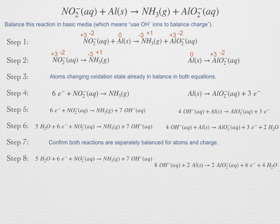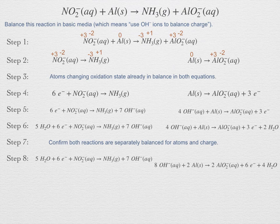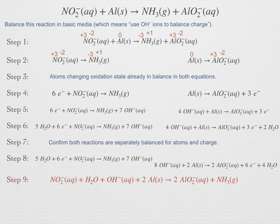Step 8: scale the reactions so that they both have the same number of electrons. The nitrogen reaction has 6 electrons, so multiply the aluminum reaction by 2 to bring its 3 electrons up to 6. Combine the half reactions to cancel electrons and anything else in excess. After cancelling — 7 hydroxide ions cancel leaving 1, and 4 water molecules cancel leaving 1 — the final balanced equation is: NO₂⁻ + H₂O + OH⁻ + 2Al → 2AlO₂⁻ + NH₃. It is always a good idea to check the final equation to confirm atoms and overall charge are in balance.